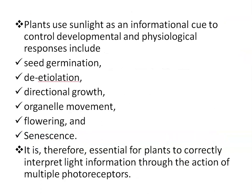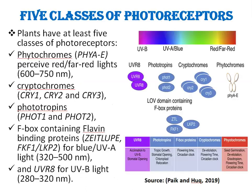Plants use sunlight not only as an energy source for photosynthesis but also as an informational cue to control a broad range of developmental and physiological responses, including seed germination, de-etiolation, directional growth, organelle movement, flowering, and senescence. Because many important physiological processes are controlled by light, it is therefore essential for plants to correctly interpret light information through the action of multiple photoreceptors.